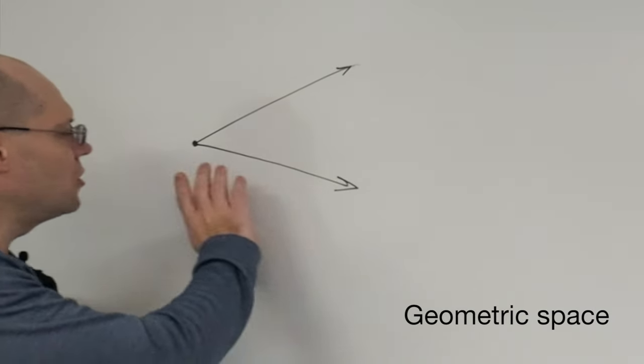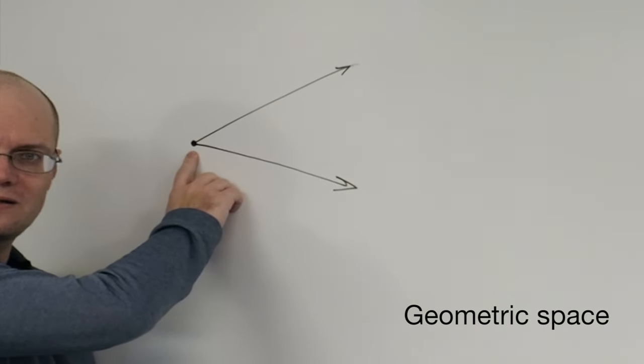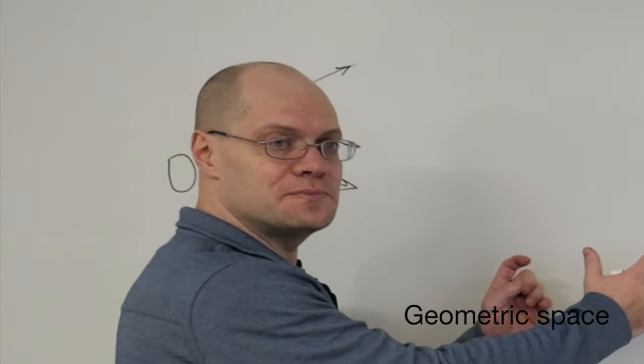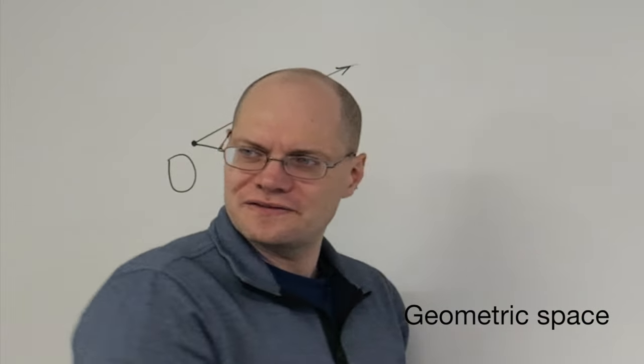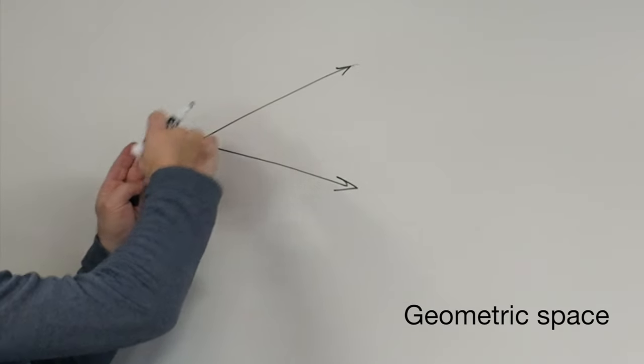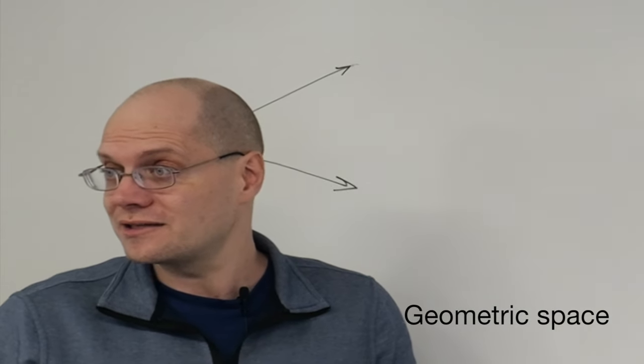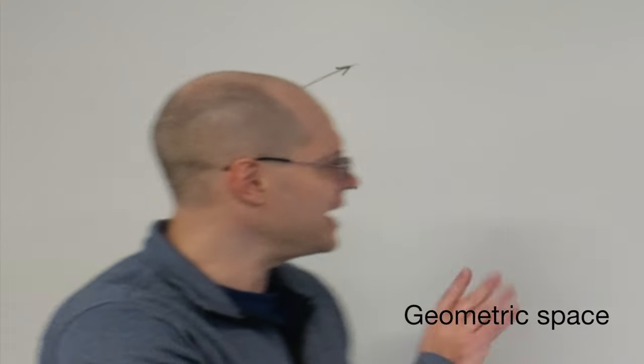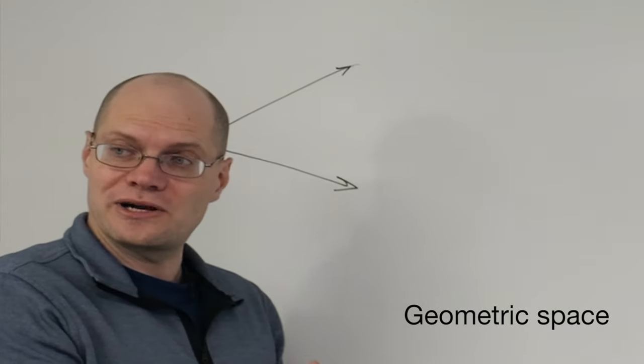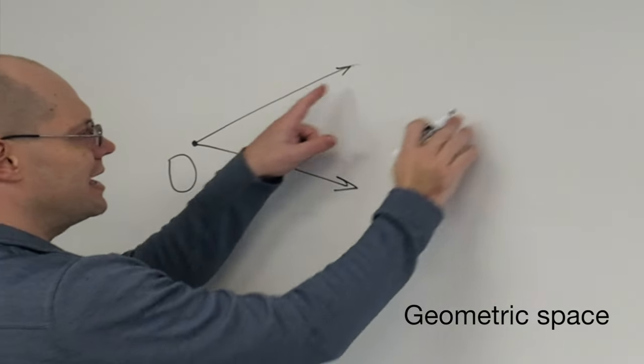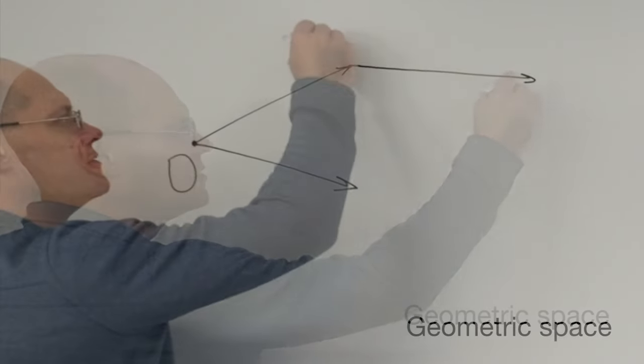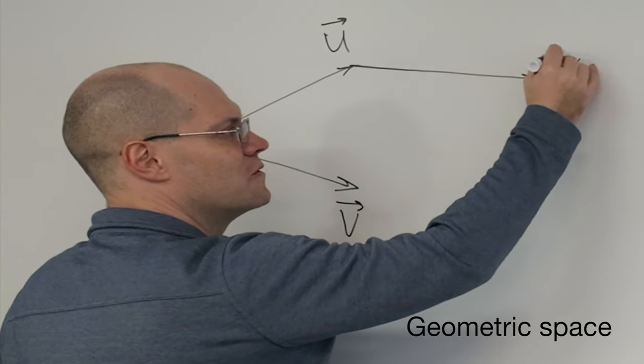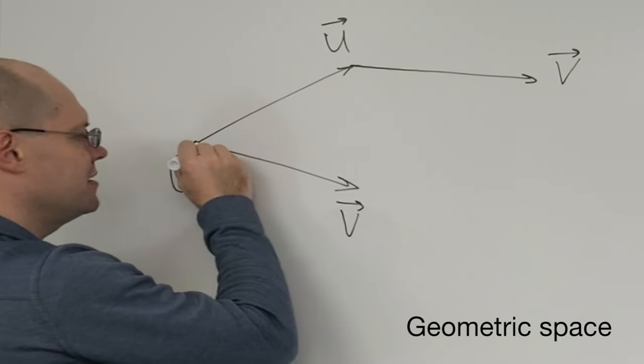I haven't even defined how we would add these vectors, but the rule is of course tip to tail. When I studied linear algebra, these types of objects, the rule was called the parallelogram rule, which is equivalent. Let's try for completeness and just define what it means to add two vectors. When we talk about geometric vectors, we will always pick an arbitrary point, but just one, that's called the origin. All the geometric vectors will emanate from that point.